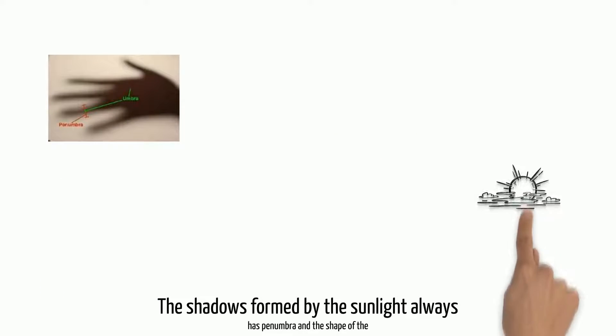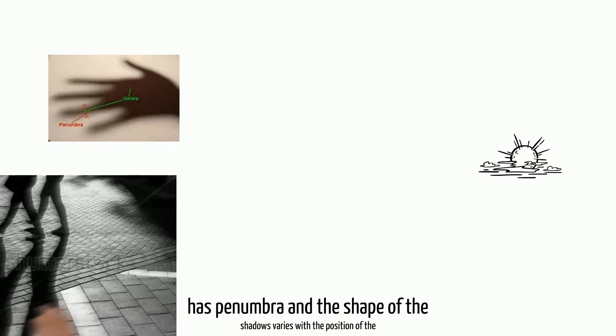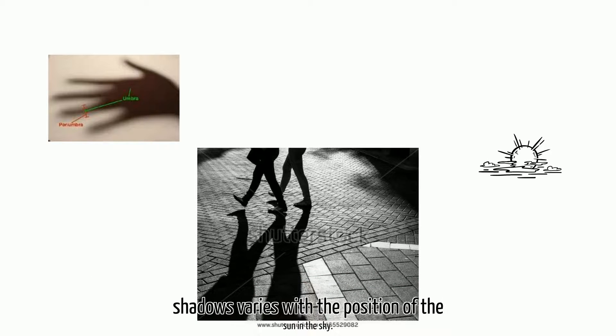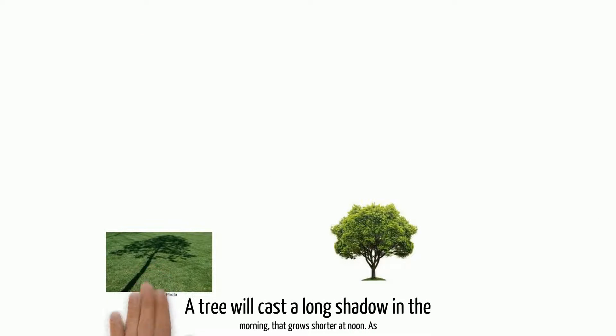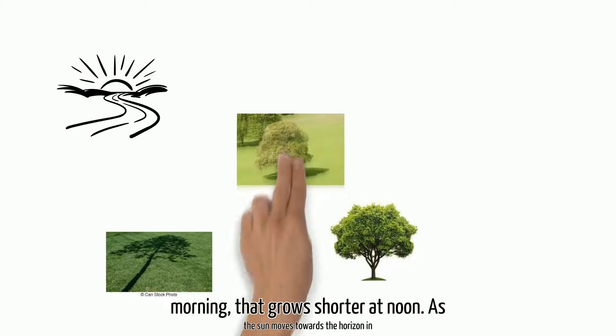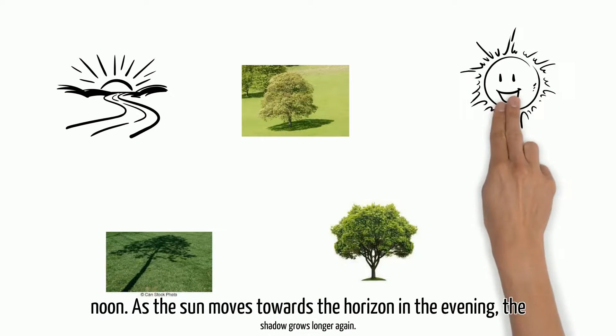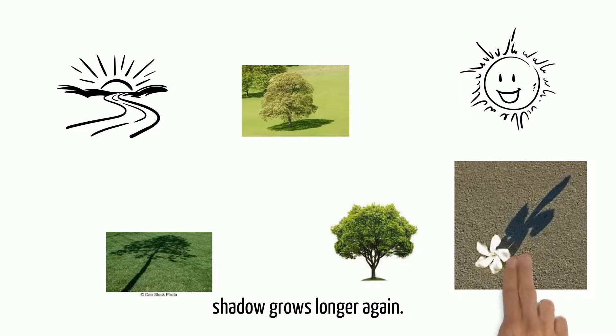The shadows formed by the sunlight always have penumbra and the shape of the shadows varies with the position of the sun in the sky. A tree will cast a long shadow in the morning that grows shorter at noon. As the sun moves towards the horizon in the evening, the shadow grows longer again.